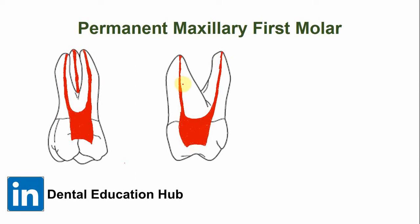In about 60% of permanent maxillary first molars, a second canal is present which is the smallest of all. This canal is known as the mesial buccal 2, or the MB2 canal.